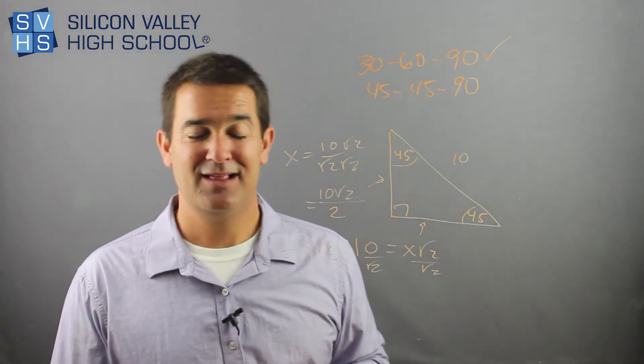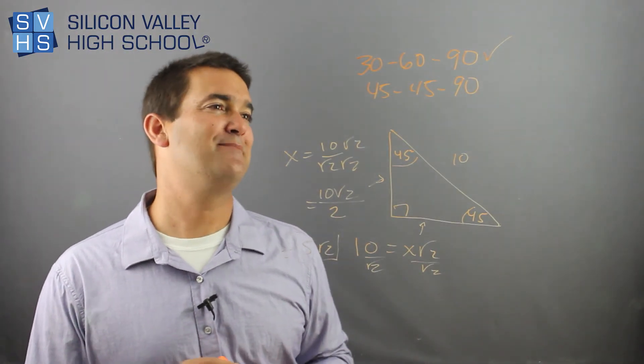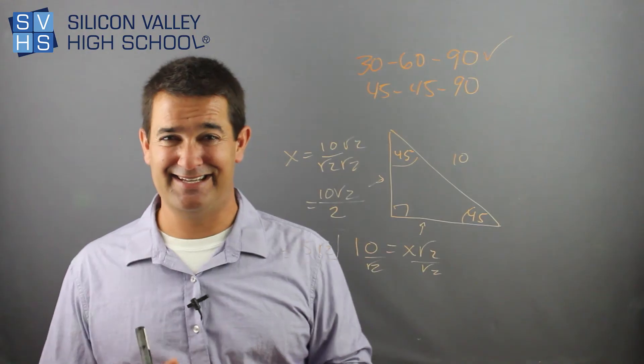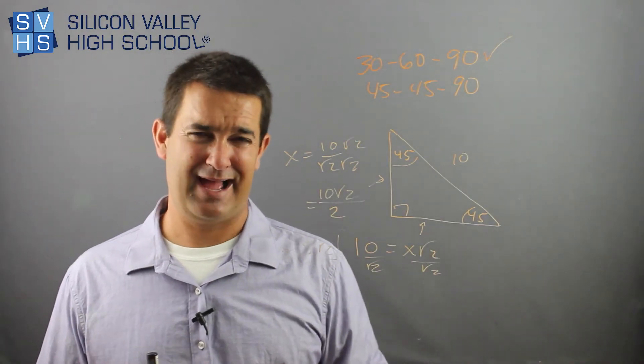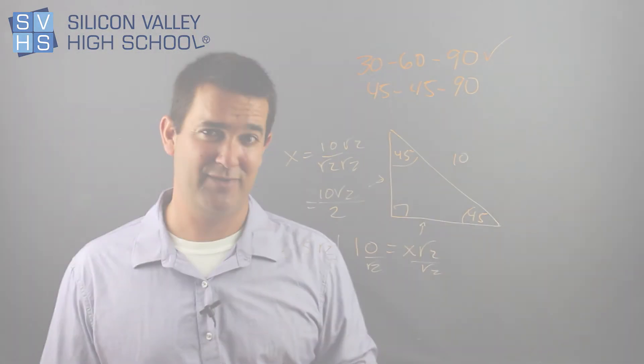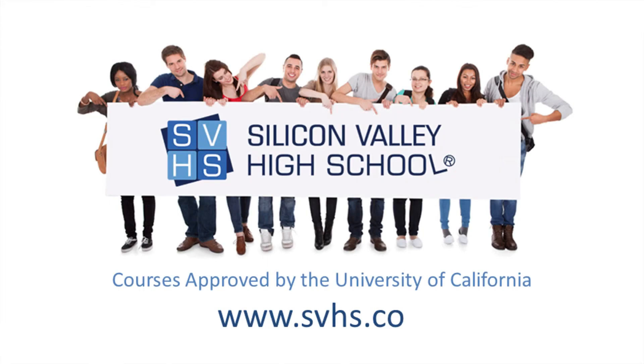Those are special triangles. There's only two of them. You really should get them memorized. They show up on SATs and ACTs and in dark alleys and everywhere. So you might want to know them pretty well. And that's it. Remember, if you're struggling with your Algebra 2 class at your local high school, you can take it online at Silicon Valley High School and the credits will be transferred back to you from there.